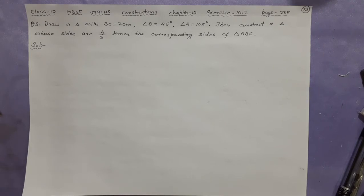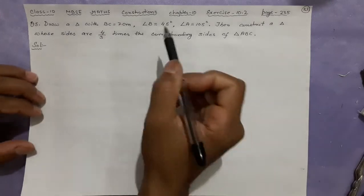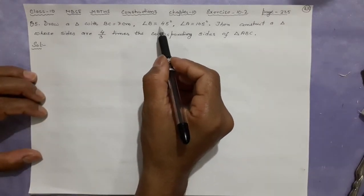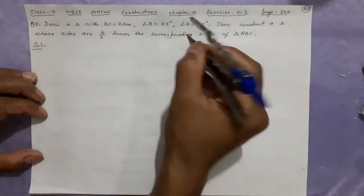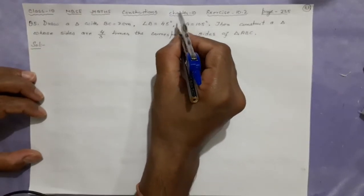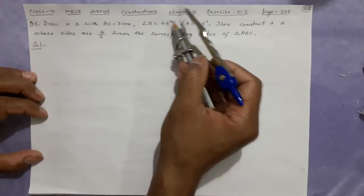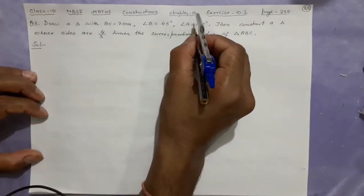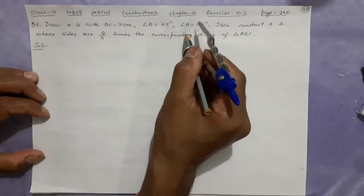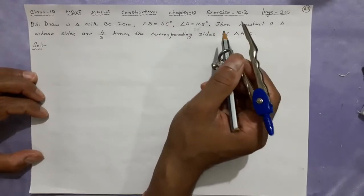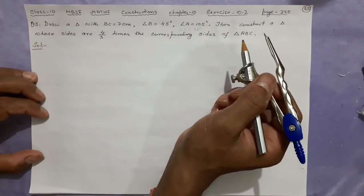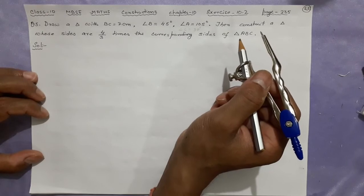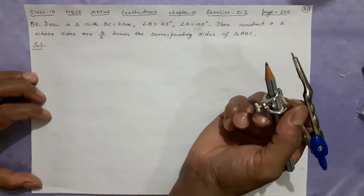It is easier to not make the 105-degree angle directly. Since angle B is 45 degrees and angle A is 105 degrees, angle C will be 180 minus 45 minus 105, which equals 30 degrees. So we will make angle B equal to 45 and angle C equal to 30 degrees. This is the shortcut — we avoid constructing 105 degrees, which takes more time. The rest is similar to questions three and four.